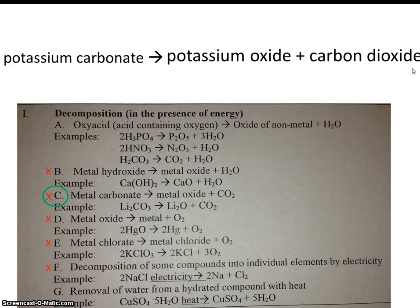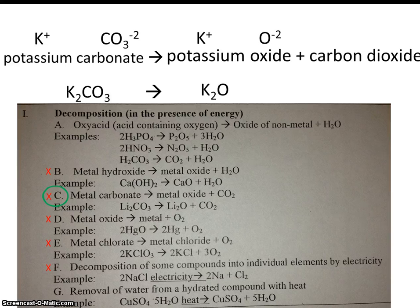So after you've predicted the products, the next step is to write the formulas. Write the formulas like you always would. Look up the symbol and the charge on the periodic table, and then zigzag those charges to get your subscripts. So potassium is plus 1, oxide is minus 2, plus carbon dioxide, which is CO2. And you'll notice that this equation is already balanced.